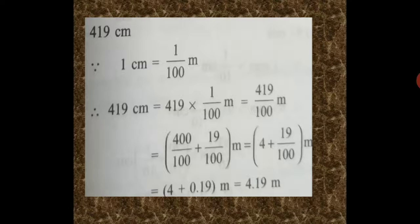That is equal to 9.07 meter. What about 419 centimeter? We know that 1 meter is equal to 100 centimeter. Therefore, 1 centimeter is equal to 1 by 100 meter. So, 419 centimeter is equal to 419 upon 100 meter. In decimal form, it is 4.19 meter.